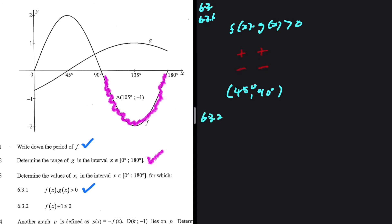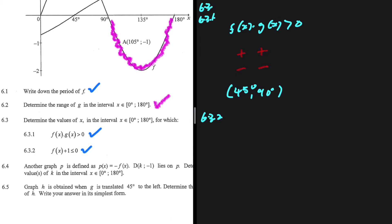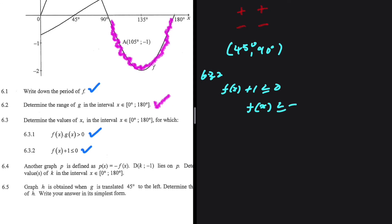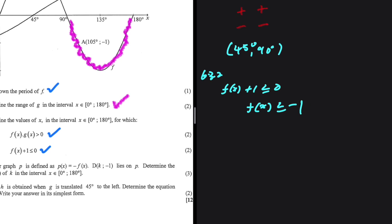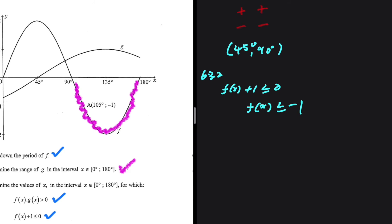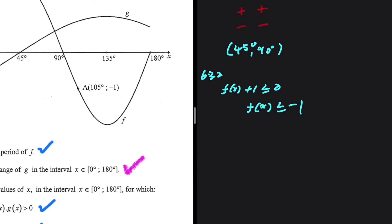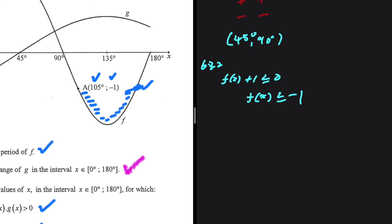For 6.3.2, we need values of x for which f(x) + 1 ≤ 0. Rearranging, f(x) ≤ -1. Going to the graph, we are given point A with coordinates (105°, -1). As x increases from there, f(x) increases, so f(x) is less than -1 up until that point.